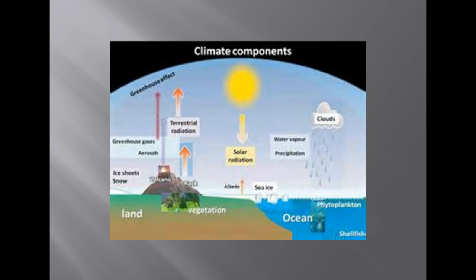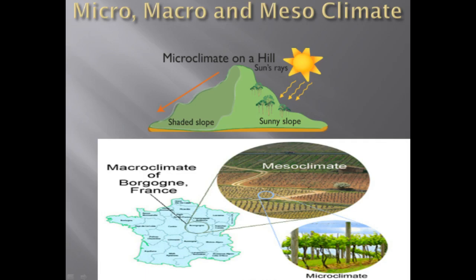There are four major abiotic components of climate: temperature, water, sunlight, and wind. Climate is defined as the long-term prevailing weather conditions in an area.